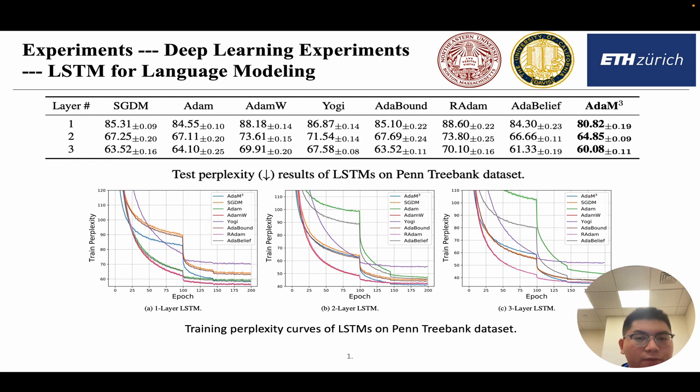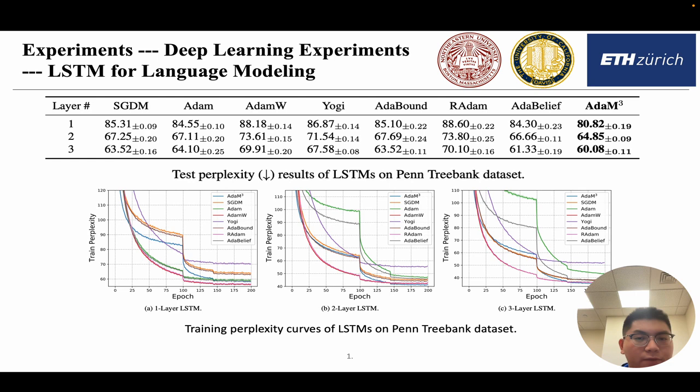We also did experiments on LSTM for language modeling. Our AdaM3 gets state-of-the-art results compared with the baselines. We also did experiments in transformer for neural machine translation and GANs on CIFAR-10 dataset generation. Our AdaM3 performed consistently the best, which demonstrates that our proposed optimizer is universally good.